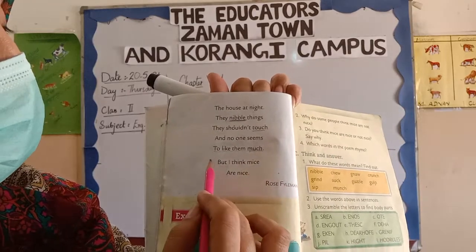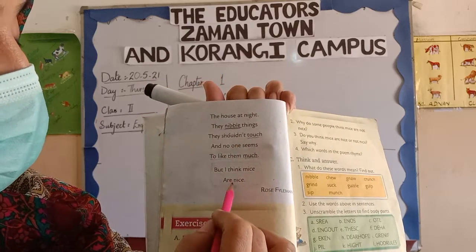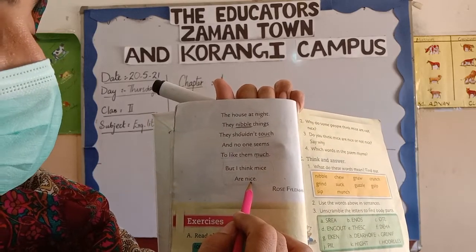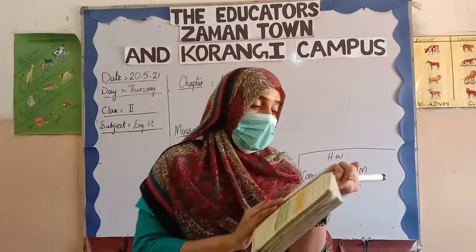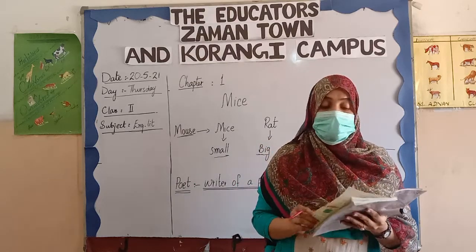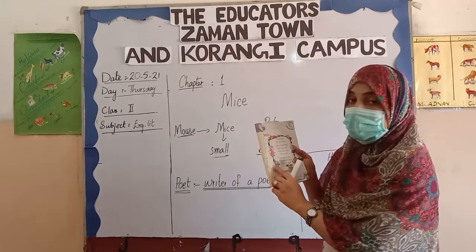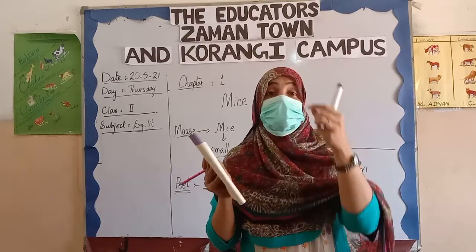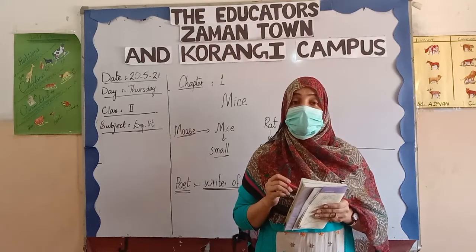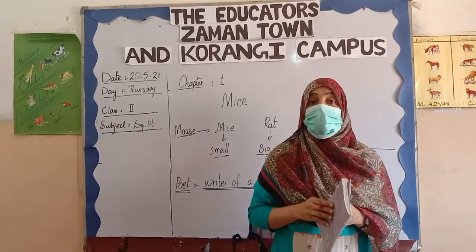But there is a very interesting line at the last. The poet, the writer of this poem, is saying: but I think mice are nice. Do you like mice? I don't know why the poet likes mice — perhaps he likes their small ears and long tail. That's why he says I like mice. Because I don't like mice — they nibble things, they run here and there all night, they live in dirty places. That's why mostly people don't like mice.